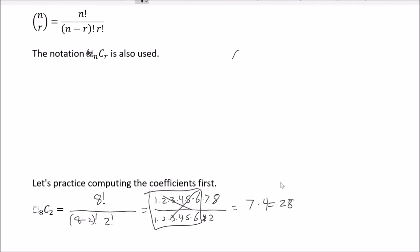If you have a calculator, find the nCr button — on a TI Nspire it says 'combination' in a menu. Usually you hit 8 first, then the combination button, then 2. I'm sitting here with my calculator as I make this video and it pops out 28. So that's all that is. Let's practice a few more.